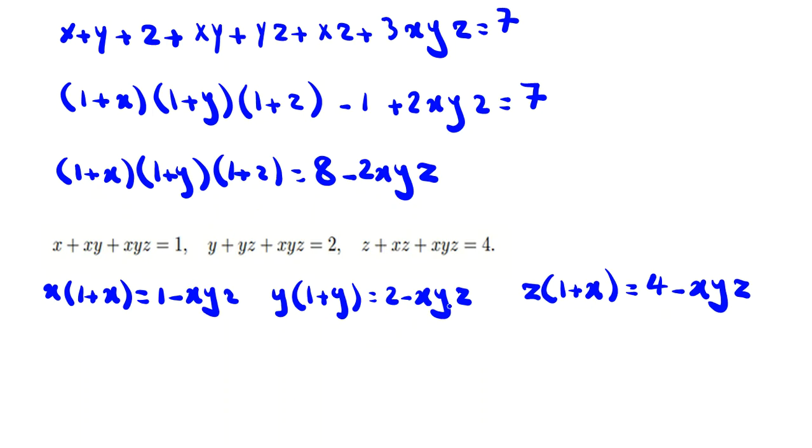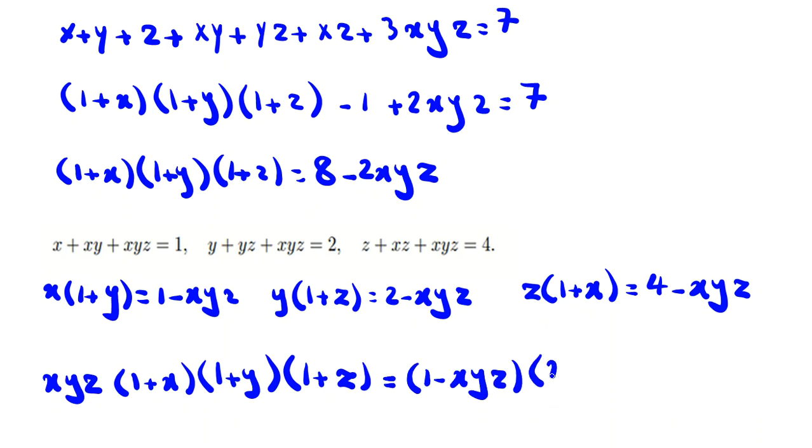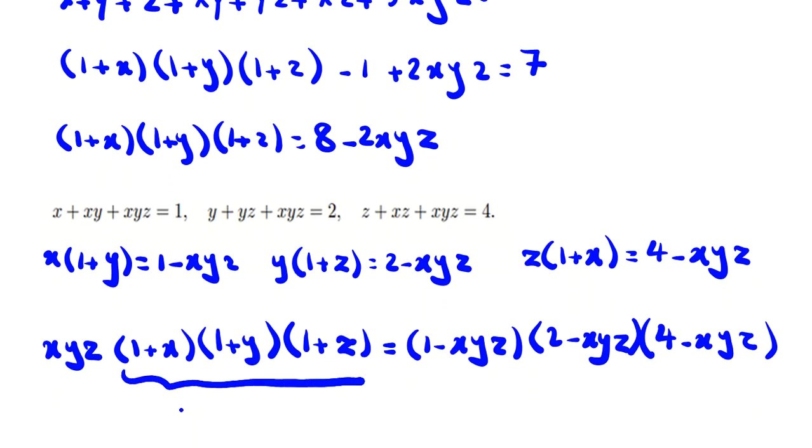We have xyz. If we multiply all these terms, then I have xyz(1 + x)(1 + y)(1 + z) = (1 - xyz)(2 - xyz)(4 - xyz).